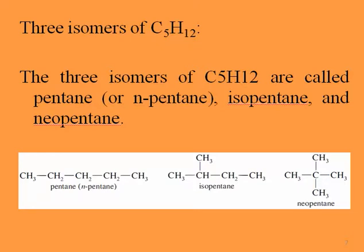Next is pentane. Pentane has five carbon atoms, so we have three isomers of pentane. The three isomers of pentane, C5H12, are called n-pentane (or normal pentane), isopentane, and neopentane. As you can see, pentane has three isomers while butane had only two.